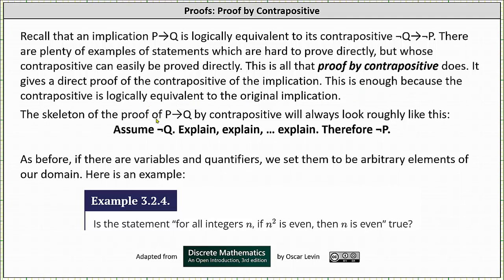The skeleton of the proof of P→Q by contrapositive will always look roughly like this: Assume ¬Q, explain, explain, explain, therefore ¬P, indicating the original implication is true.